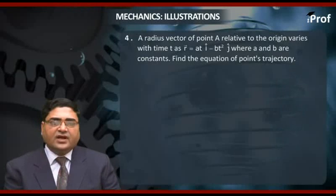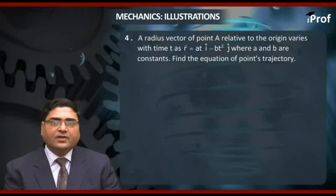as r vector equal to at i cap minus bt square j cap where a and b are constants.